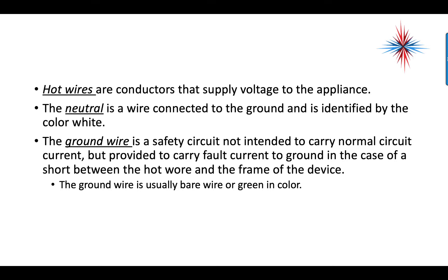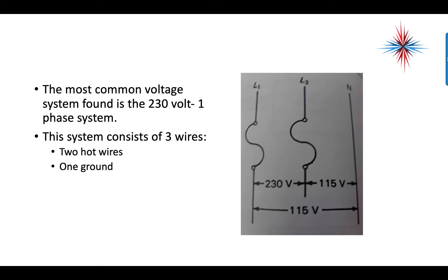The ground wire is a safety circuit not intended to carry normal circuit current. It is usually bare wire or green in color. The most common voltage found in the 230-volt single-phase system uses three wires — as you'll see inside a breaker panel — with two hot wires and one neutral, called L1, L2, and N. Between L1 and L2 you have 230 volts. Between L2 and neutral you have 115 volts. Between L1 and neutral you have 115 volts.